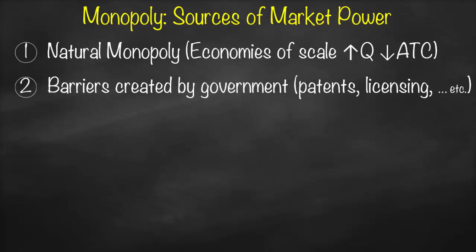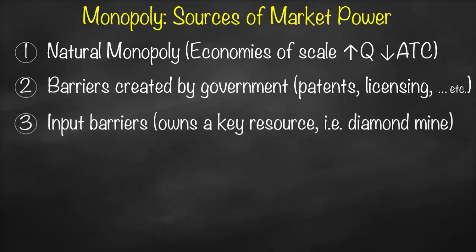You are protected in order to enhance innovation and research and development. Another source of market power is input barriers. Sometimes the raw materials you would like to use are limited. For example, if we have a diamond mine, we don't have many diamond mines, so if we discover one diamond mine in a country, that mine because of limited resources will be considered an example of a monopoly.